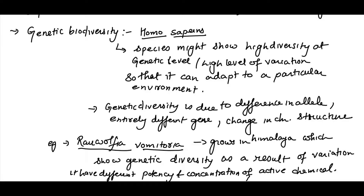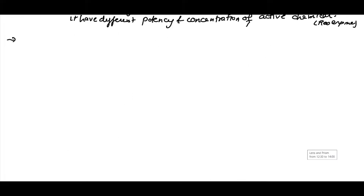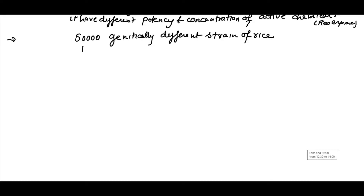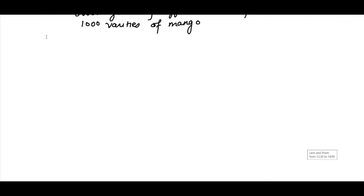Let us look at one more example. We have more than 50,000 genetically different strains of rice, and if we are talking about mangoes, we have 1,000 different varieties. These are the result of genetic diversity among organisms.